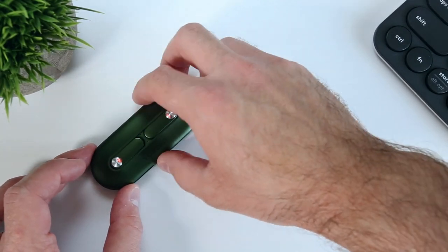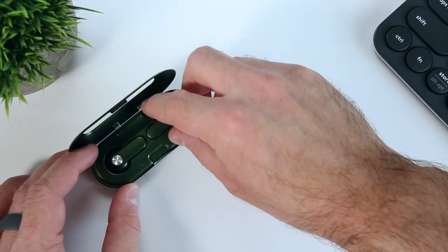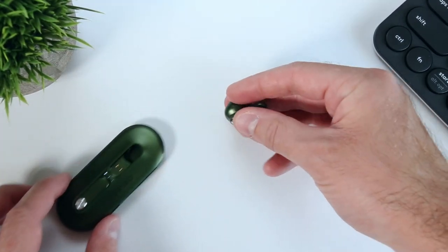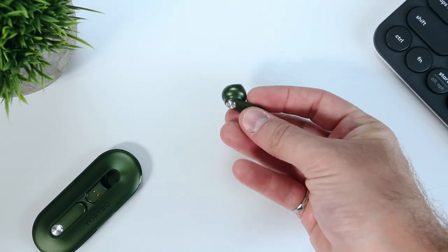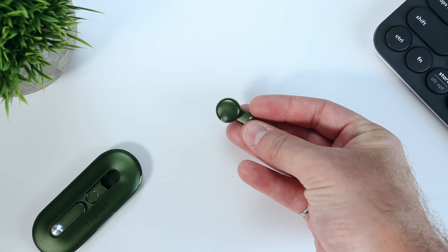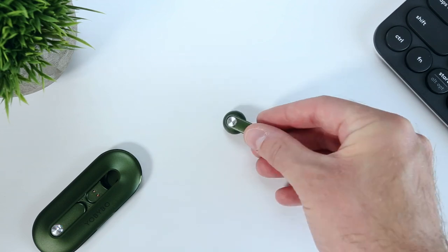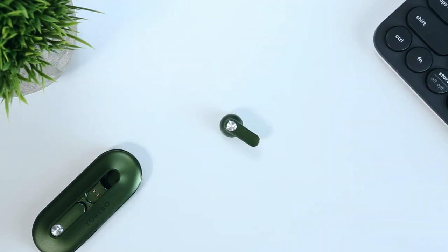The earbuds themselves are quite tiny and mostly plastic, which is both a pro and a con because while they're really light, weighing in at only 3 grams, the light plastic doesn't feel as high quality as some other earbuds and you only get IPX4 water resistance so you won't want to fully submerge them.